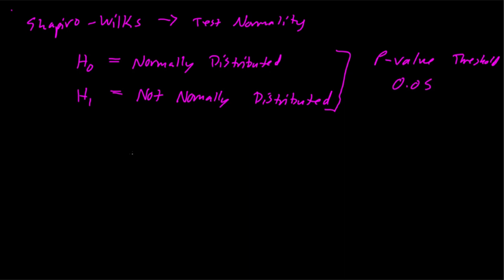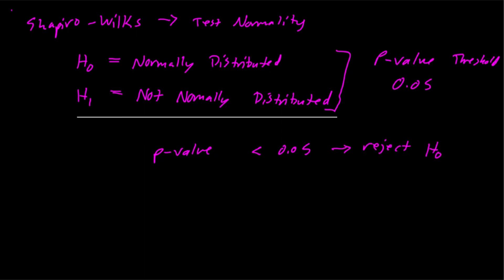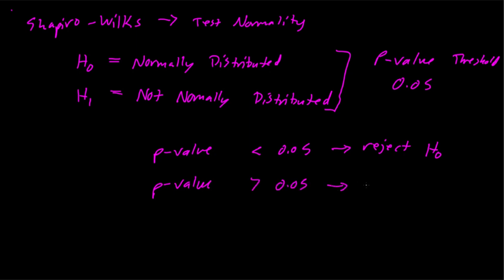If we run this test and end up with a p-value less than 0.05, we say that we reject the null hypothesis. If we reject the null hypothesis, we would say that the data is not normally distributed. If we end up with a p-value greater than 0.05, what we like to say in statistics is we fail to reject H-naught.